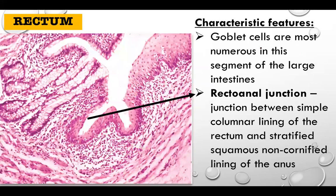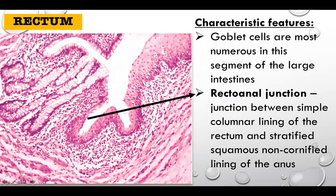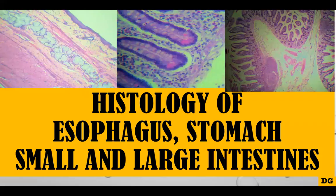In the distal portion of the large intestine — the rectum — goblet cells are the most numerous. This is the recto-anal junction, where the lining epithelium changes from simple columnar with goblet cells of the rectum to stratified squamous non-cornified epithelium of the anus. This is analogous to the squamous columnar junction seen at the gastroesophageal junction. That concludes the histology of esophagus, stomach, small and large intestines.